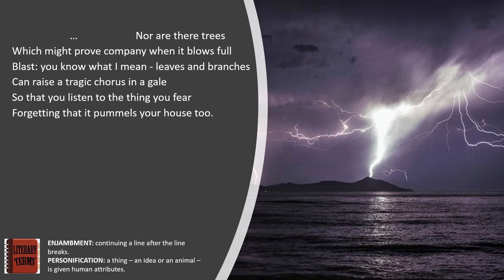When he talks about 'a tragic chorus,' this links back to Greek tragedy — a Greek chorus whose job in a play was to explain the events and make it clear to the audience what was about to happen. It's a quite interesting image — this metaphorical personification of what the trees could do. If there were trees, maybe they would help make sense of things, help the islanders understand what was happening. 'Pummels' is a very violent word — repeatedly punching — and it's also personification. We can start to feel the increasing tension as he describes the gathering energy of the storm.